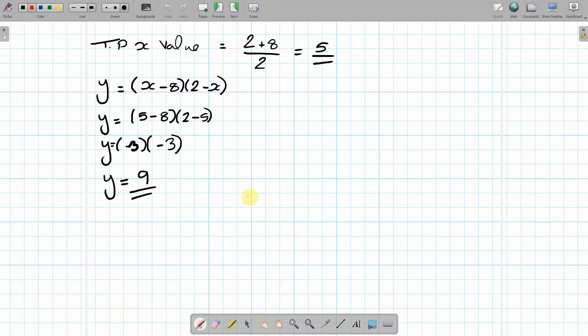So h, the value of h must be 16 plus 9. So h equals 25 units. And that is how you go about solving that problem.